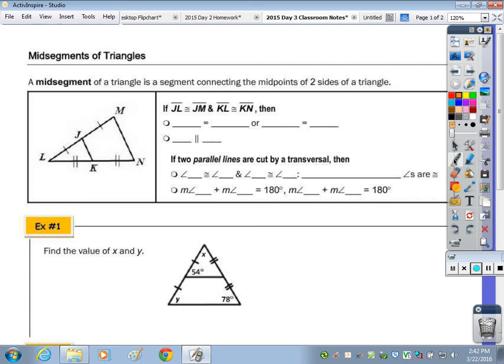By definition, a midsegment is a segment that connects the midpoint. If it tells me that the length of JL is equal to the length of MJ, if the segments are congruent, that's what the dashes indicate. And if KL is congruent to NK, then that means K is a midpoint and J is a midpoint. So therefore, the segment JK is a midsegment.